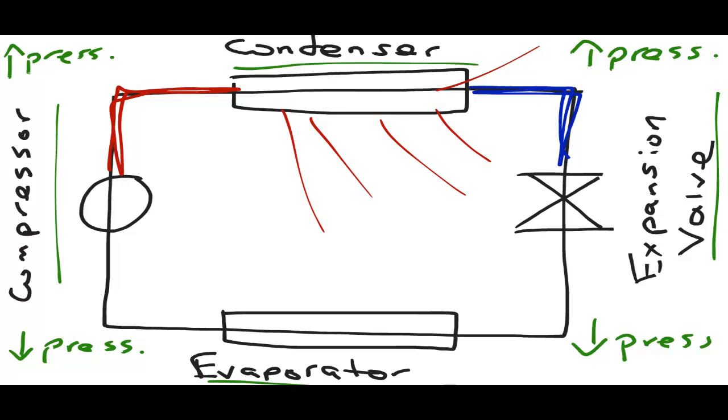At this point, the refrigerant is still at a high pressure. This is where the expansion valve comes in. The job of the expansion valve is to decrease the pressure of the refrigerant. Now that the refrigerant is in a liquid state with a low temperature and a low pressure, it is now ready to pass through the evaporator.